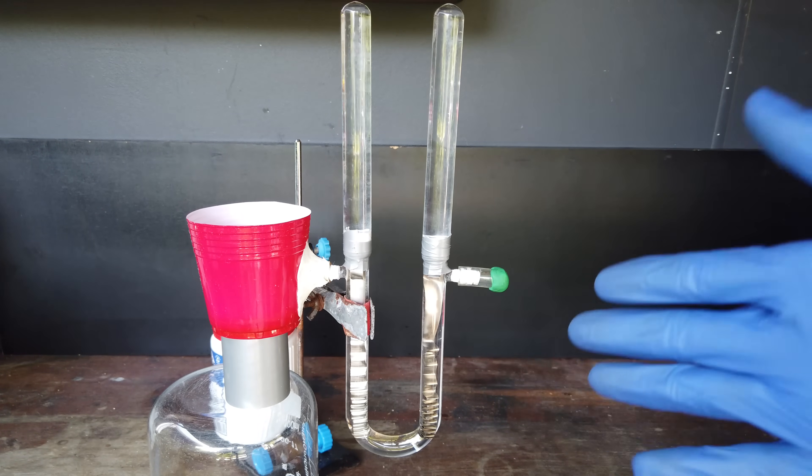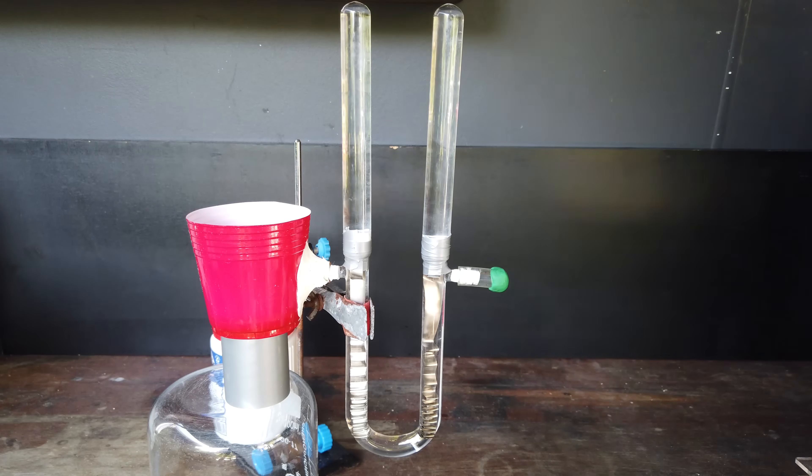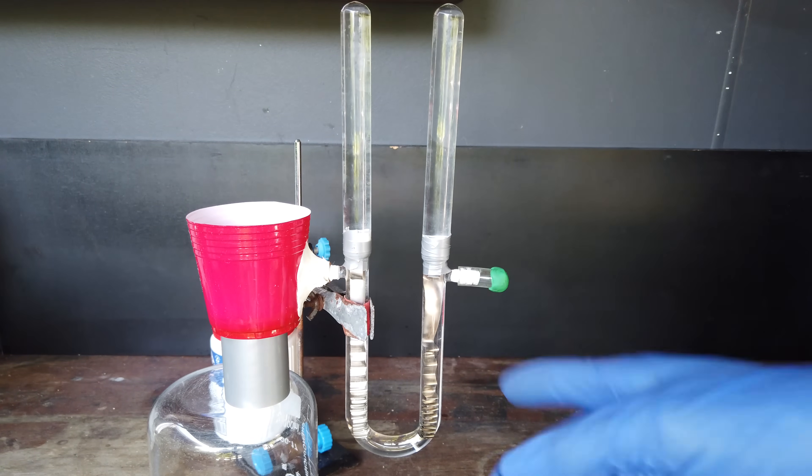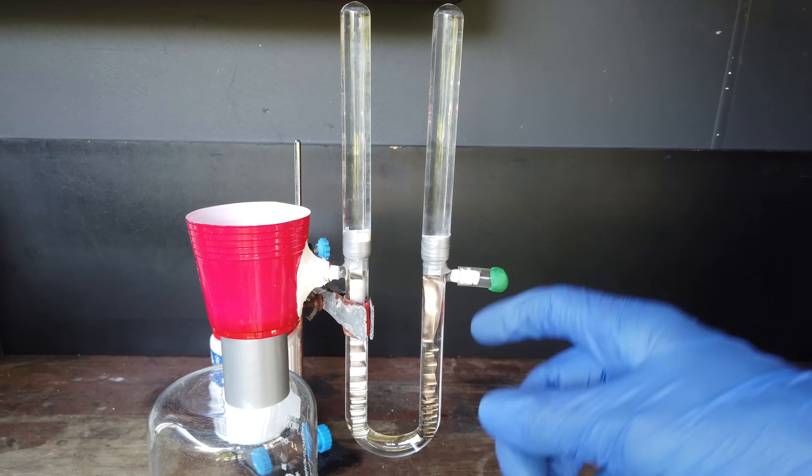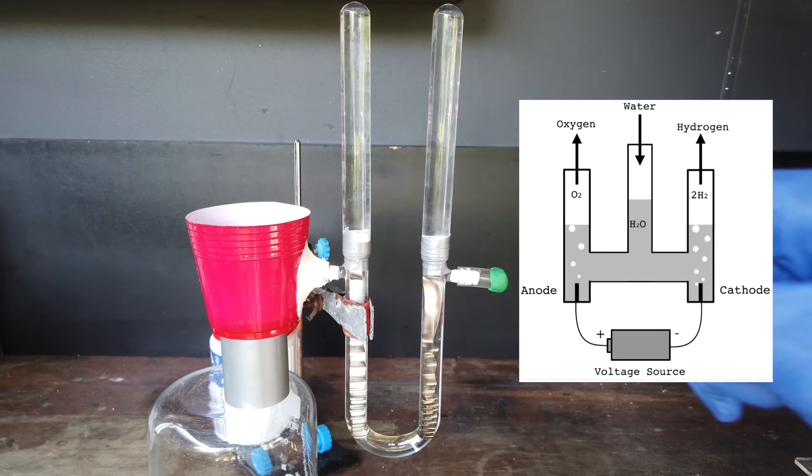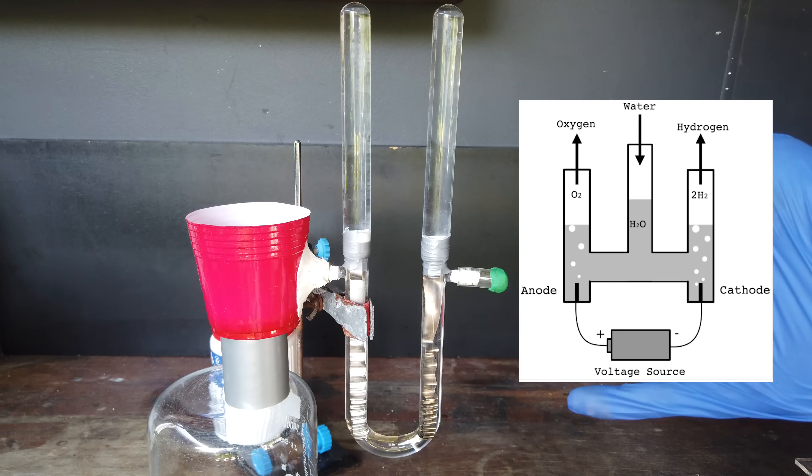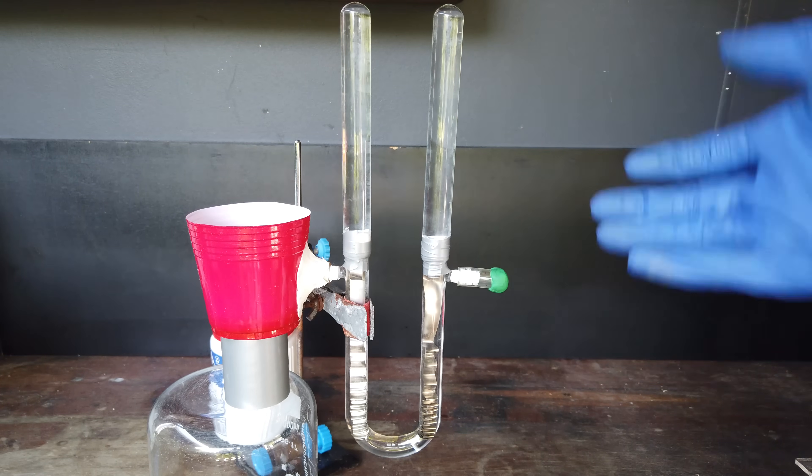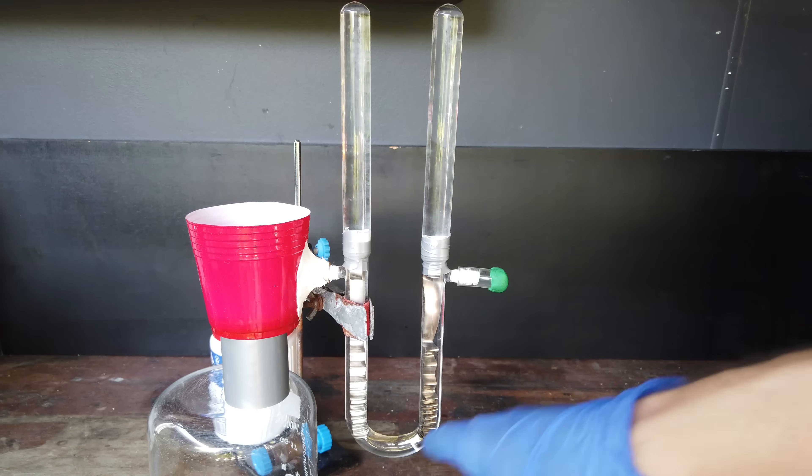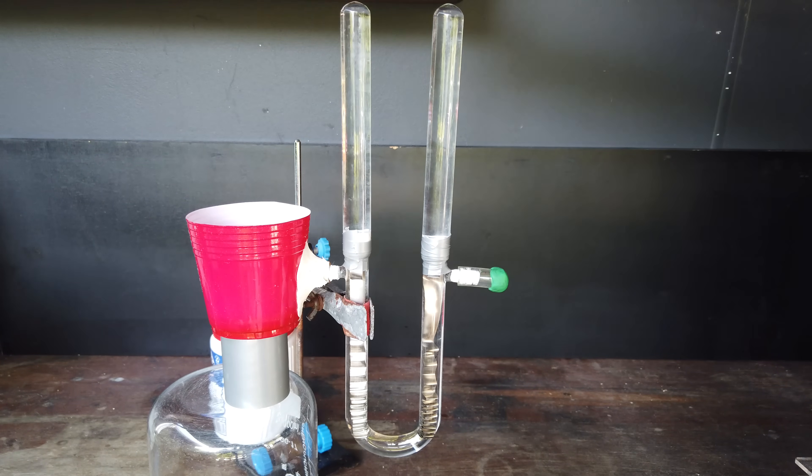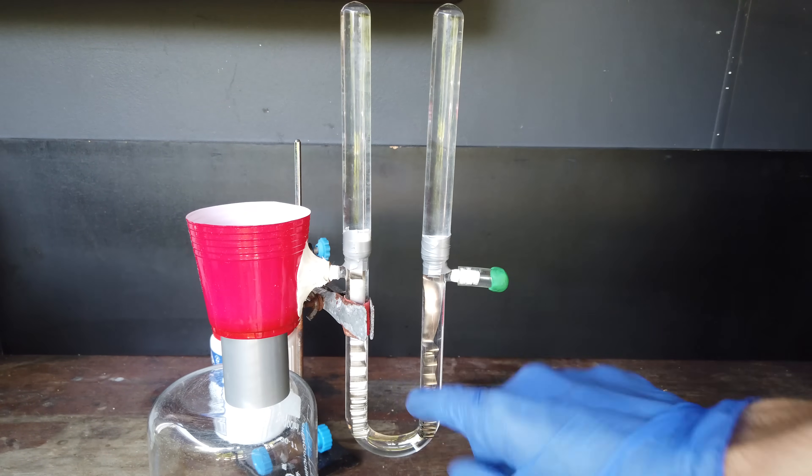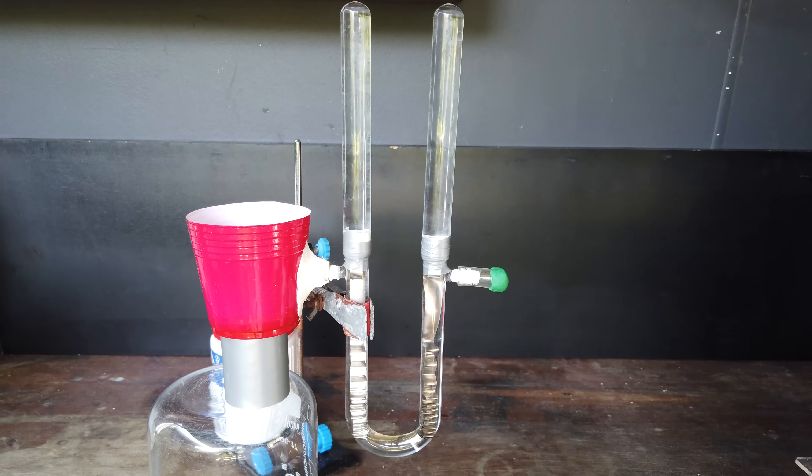So I've redesigned our electrolysis apparatus once again. You can see what we've set up is kind of similar to what's known as a Hoffman voltameter, which is a common high school electrolysis demonstration piece of glassware, where we have our two electrodes, and then the gas is collected in glass tubes positioned directly above our two electrodes there.